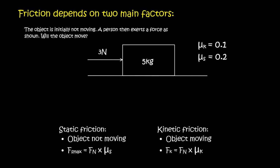It tells you that this object is initially not moving. A person then exerts a force as shown, so there's a 3 Newton force. Will the object move? So the first thing you need to understand, or what you need to first work out is the maximum static friction that that object has. So we use this formula over here.